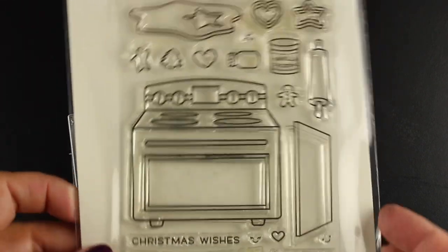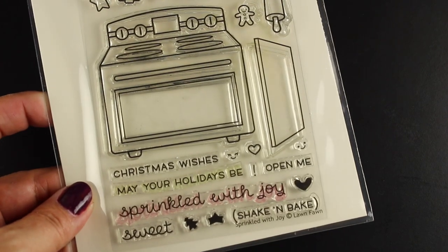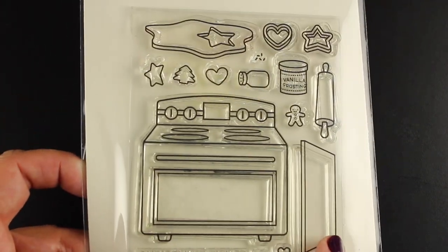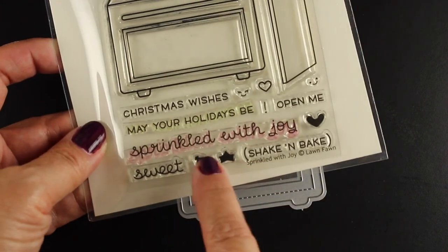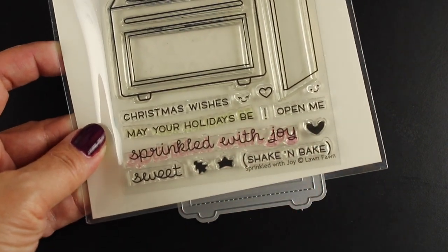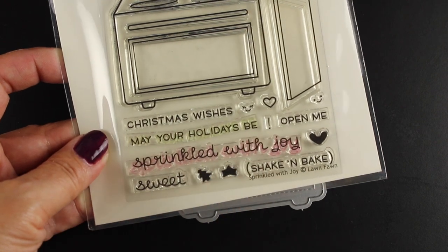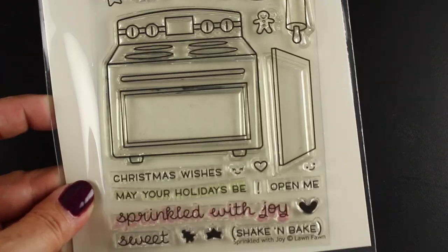So the stamp set from Lawn Fawn has an oven and lots of cookie baking types of things, different cookie cutters and little things that you can decorate with. You can use these little solid ones if you're going to stamp your frostings and stuff. Lots of great sentiments to go with it.